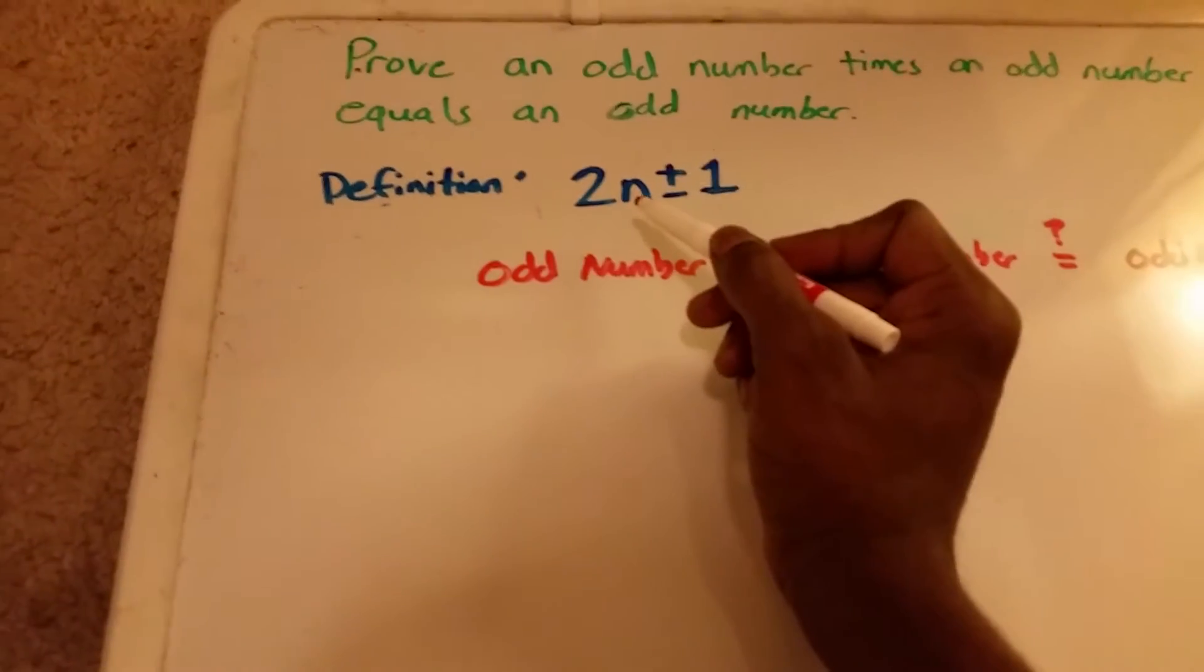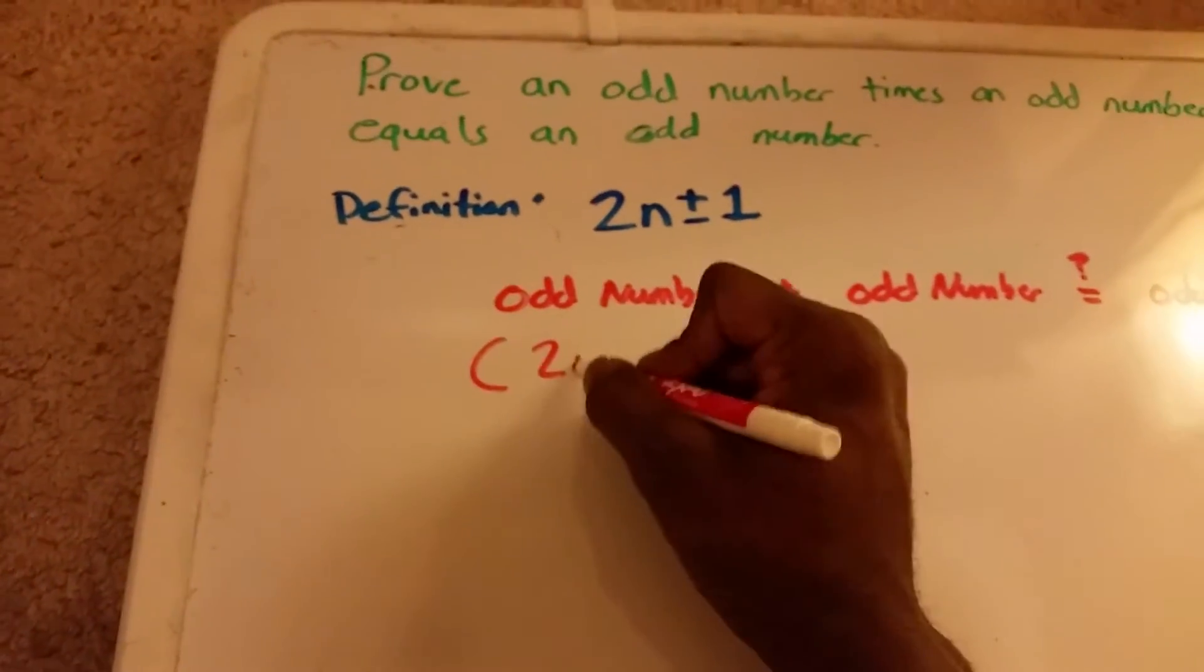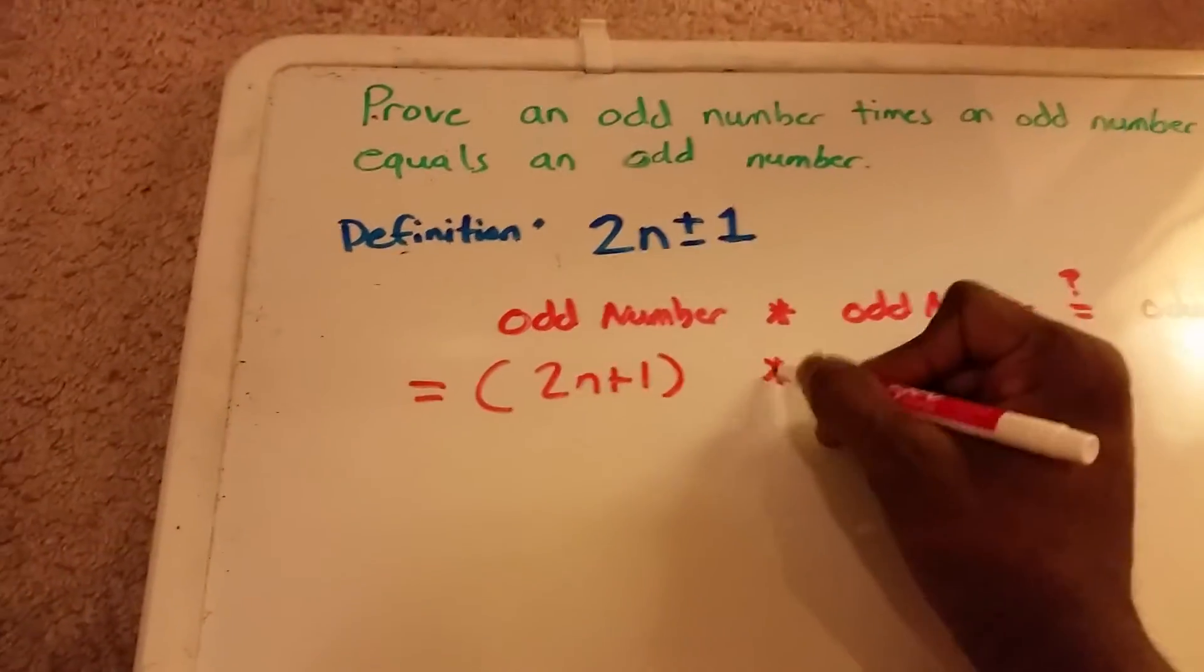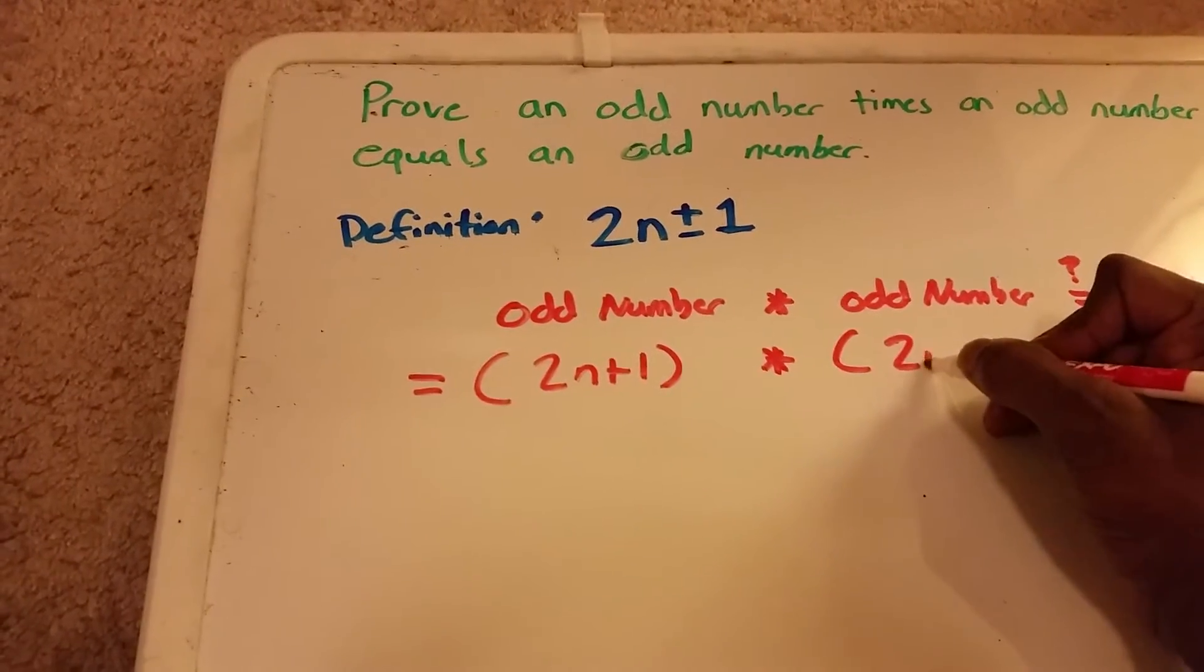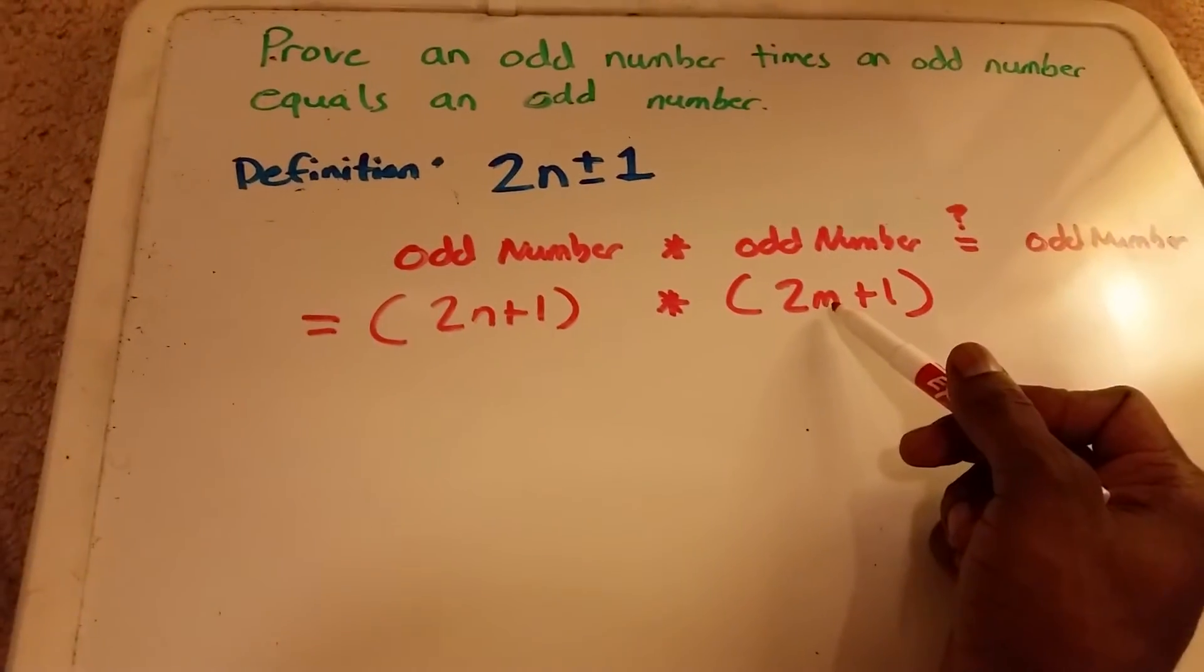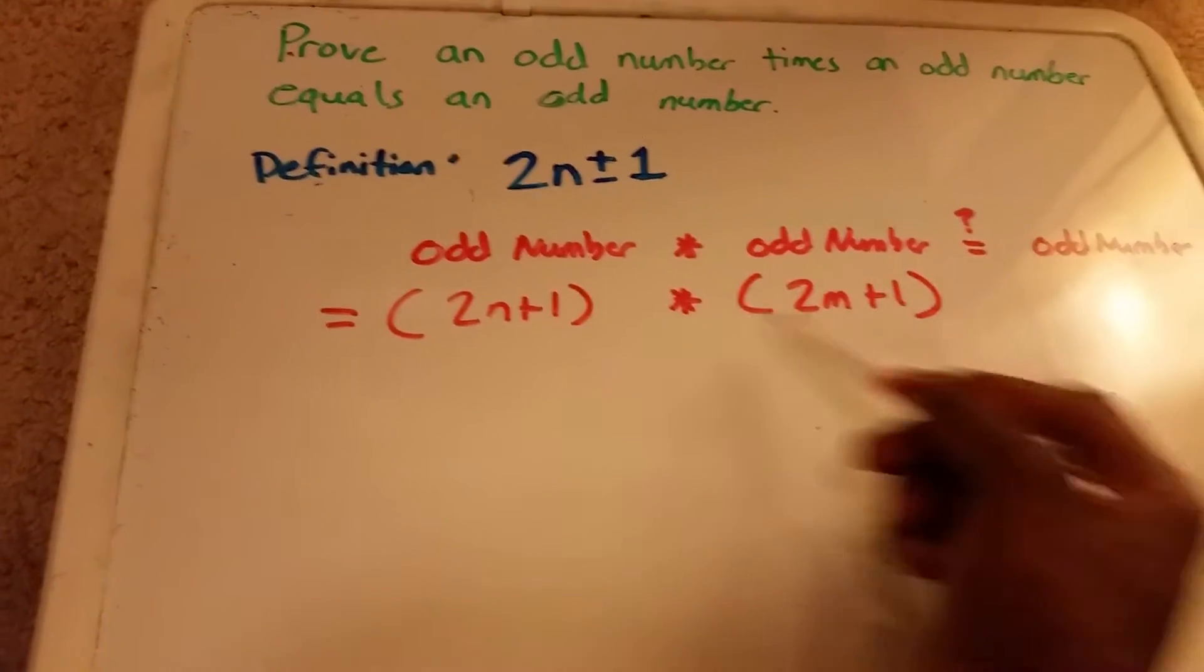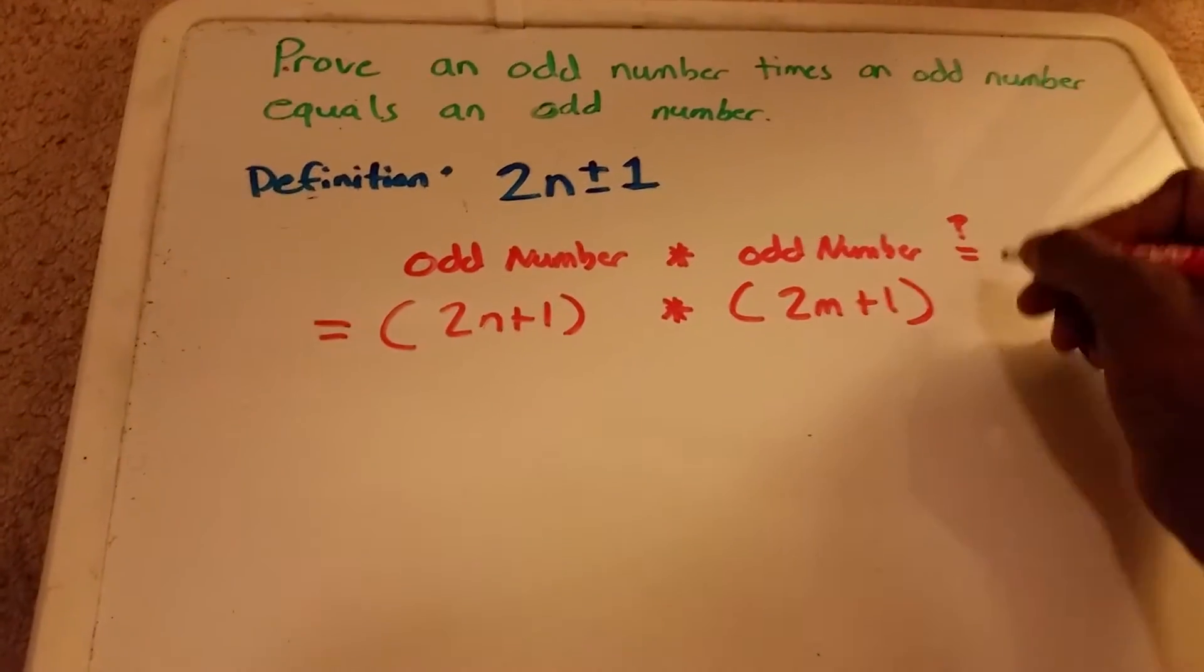So using this definition here, we can use 2n plus 1 for the first one. And we want to multiply that times 2m plus 1. So we say m here because we're not sure if m is equal to n. It could be. It might be some other odd number. So this could be 3 and 3 or it could be 3 and 5. That's why we have the m there.